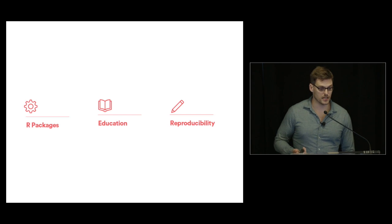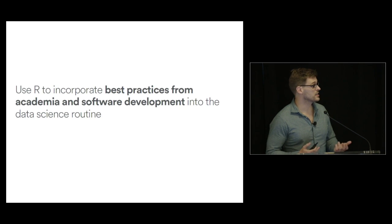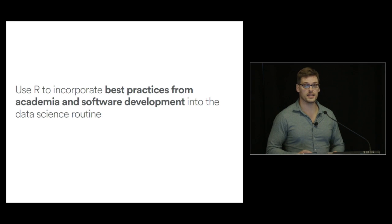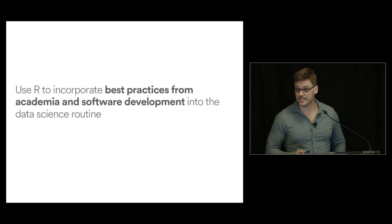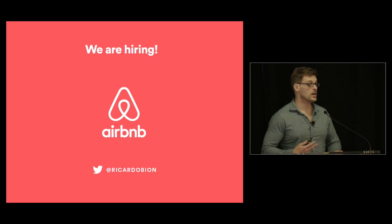So I've told you a little bit about R at Airbnb — how we use R packages, R education, and reproducibility to make sure everyone is empowered to use R in their daily life. None of those ideas are entirely new: code review is common sense from computer science, and peer review comes from academia. The insight is that R can be a powerful tool to incorporate the best practices from both academia and software development into your data science routine. Airbnb is also doing some cool open source things — Superset for data visualization, Airflow for scheduling jobs, and some external R packages. And finally, we are hiring — find me on Twitter or LinkedIn. Thank you so much.